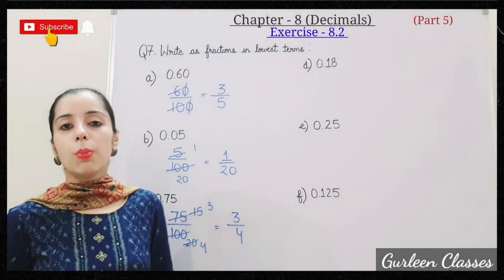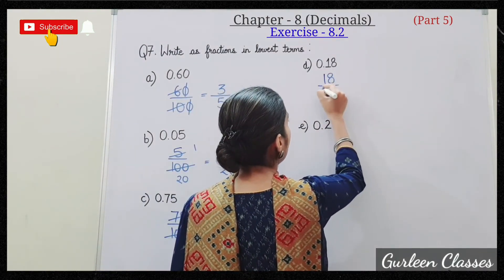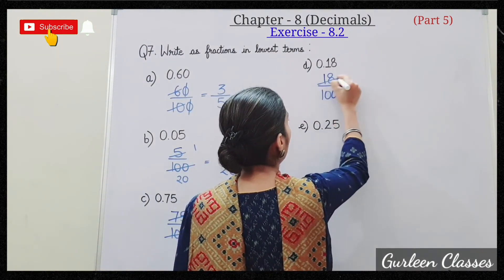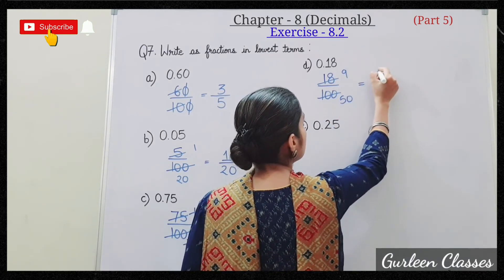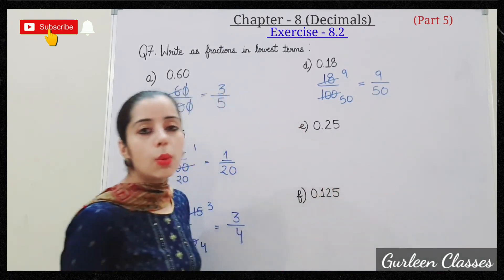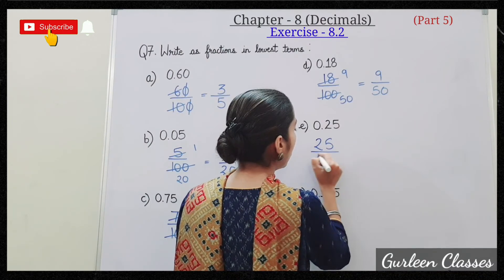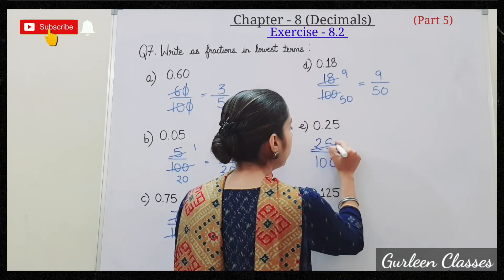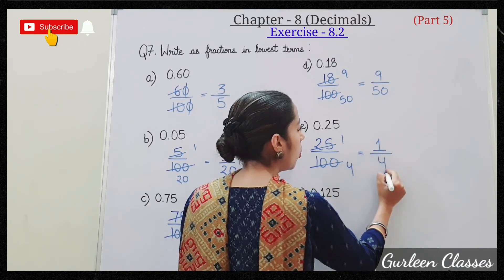D: 0.18. So in the denominator there will be 2 zeros. 18 upon 100. 2 nines are 18, 2 fifties are 100. Answer is 9 upon 50. E: 0.25. So it will be 25 upon 100. 25 ones are 25, 25 fours are 100. Answer is 1 upon 4.